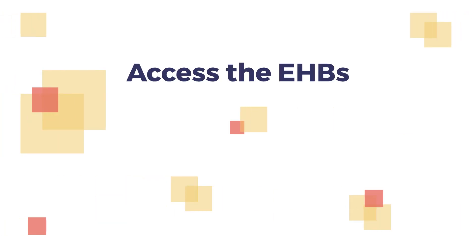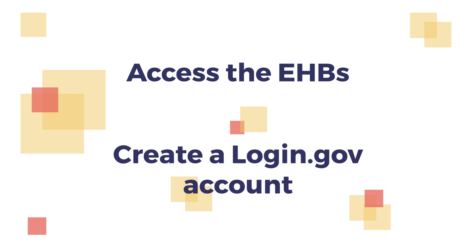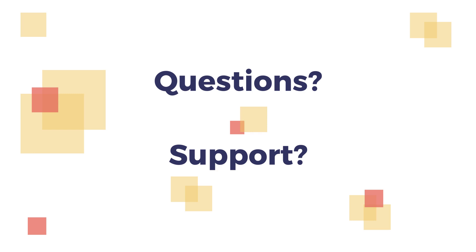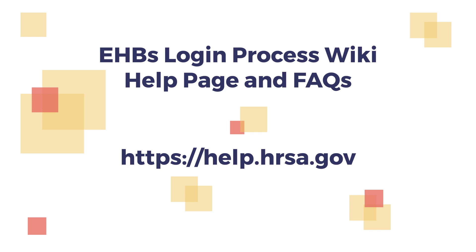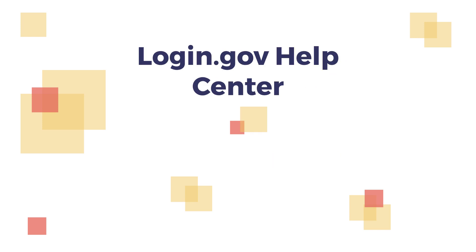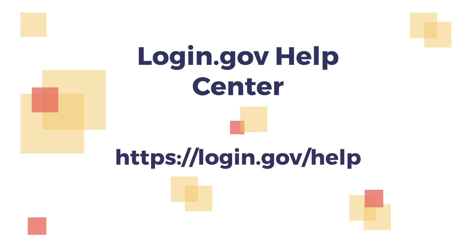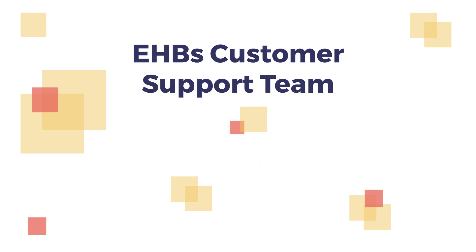And that's it! Now you know how to access the EHBs and create a login.gov account. If you have any additional questions or need support, we have several resources available. You can visit the EHBs login process wiki help page and view FAQs at https://help.hrsa.gov. For assistance with login.gov, contact the login.gov help center at https://login.gov/help. Or, for assistance with the EHBs, contact the EHBs customer support team at 877-464-4772. Thank you!